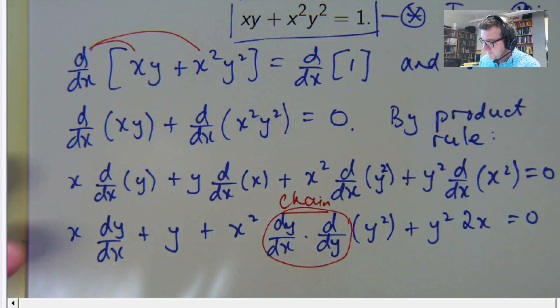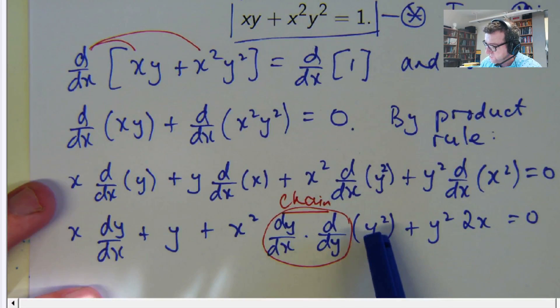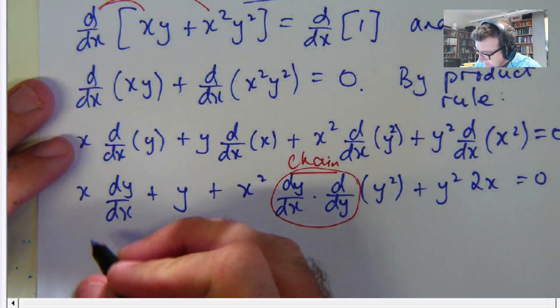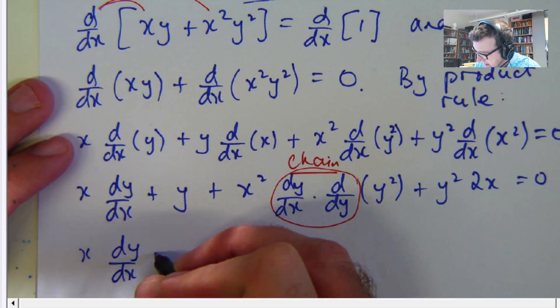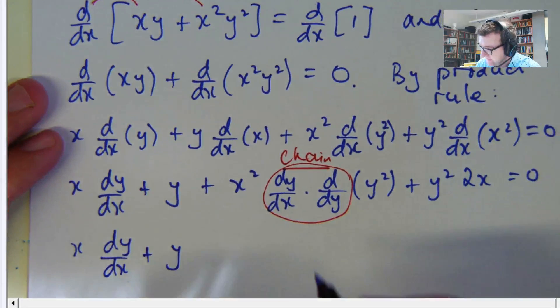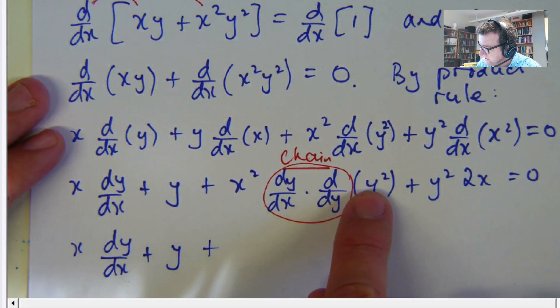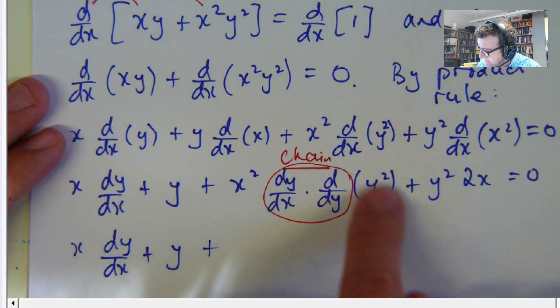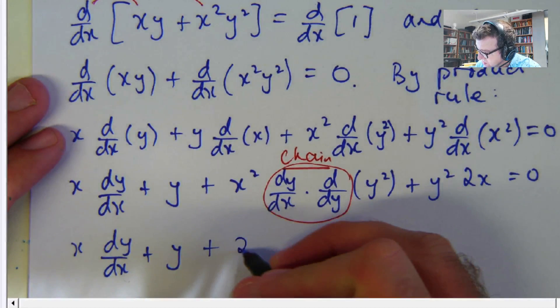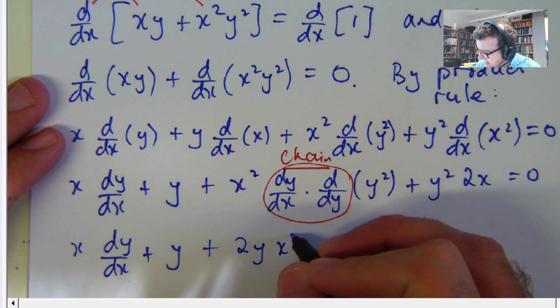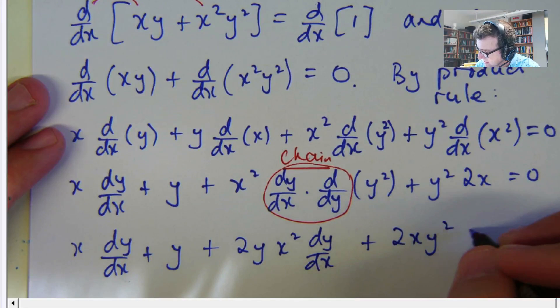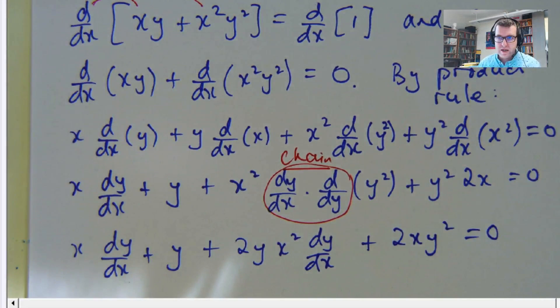Alright, so now we can take the derivative of y squared with respect to y. Awesome! The derivative of y squared with respect to y is 2y. So this is going to become a 2y, and I'm going to get x squared times 2y dy/dx. And I'll write this as 2xy squared. Phew! So we have no more differentiations to make.